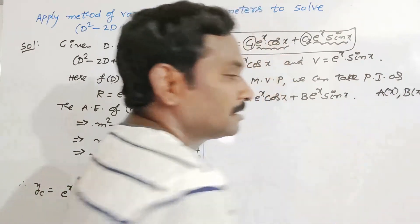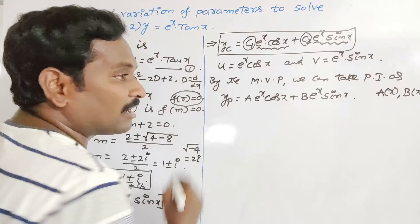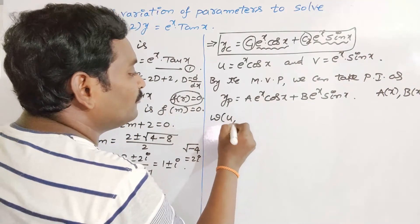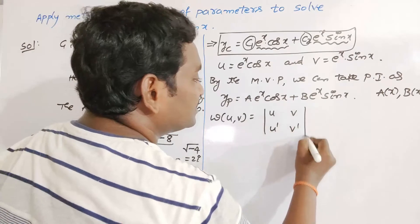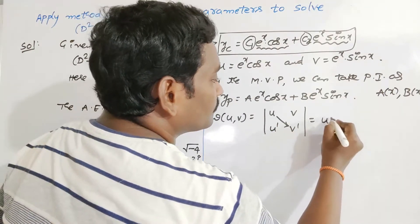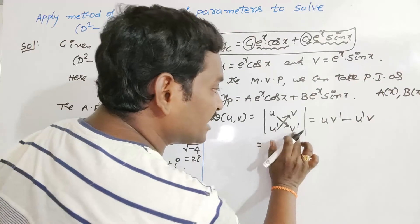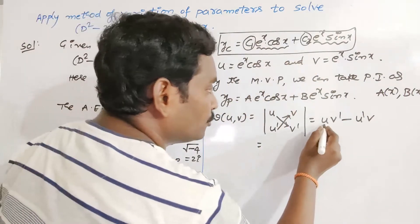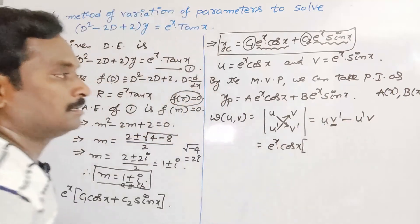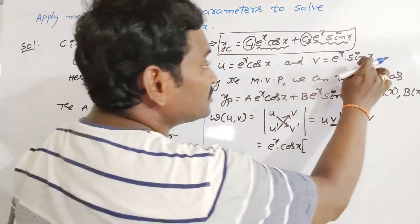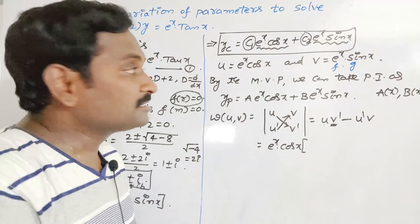Before finding a and b, we must compute the Wronskian W(u, v). The Wronskian is the determinant with first row [u, v] and second row [u′, v′], which equals u·v′ − u′·v. Here u = eˣ cos x and v = eˣ sin x, so we apply the product rule to differentiate each.